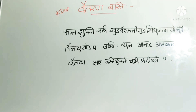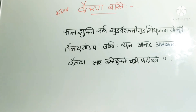The indications of Vaitarana Basti are represented in the shloka: it is given in the case of shula (pain), anaha (bloating/distension), amavata (rheumatoid arthritis-like condition), and also katigraha (low back stiffness).